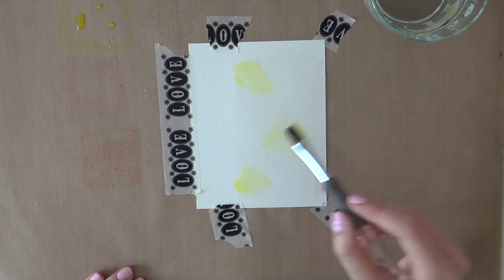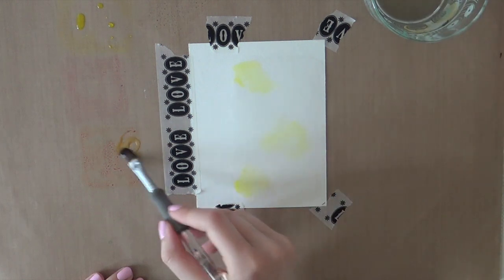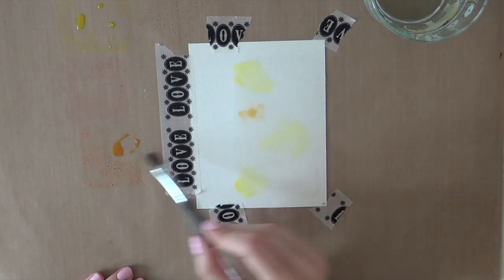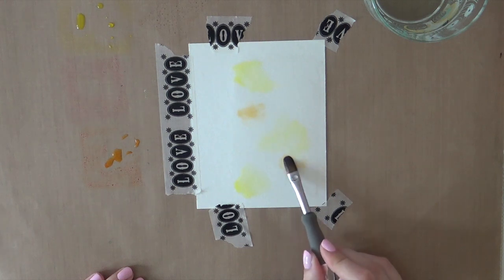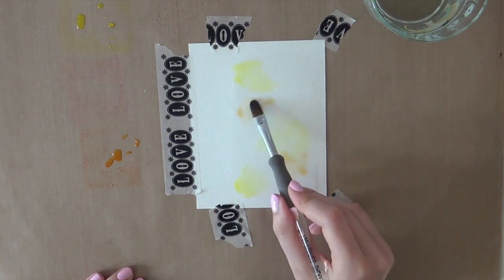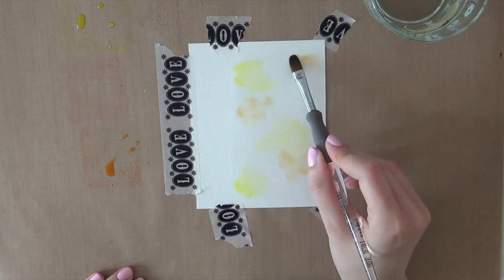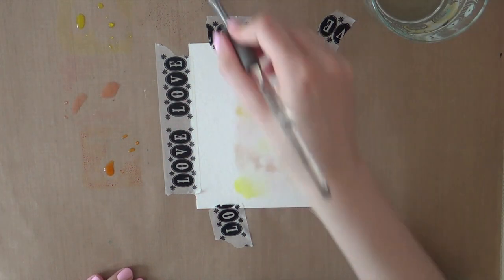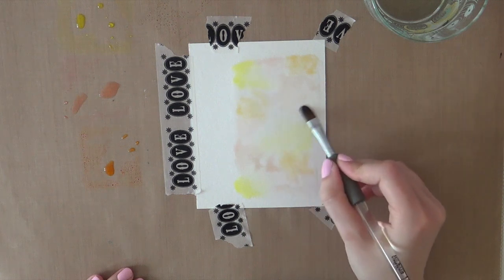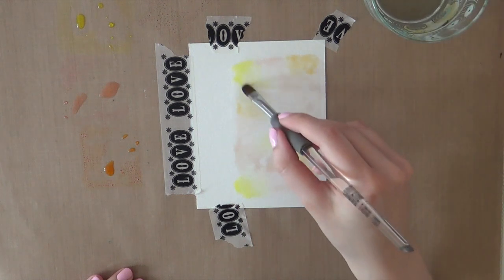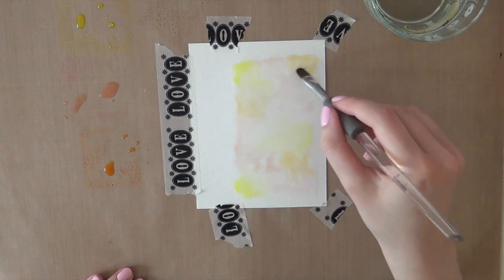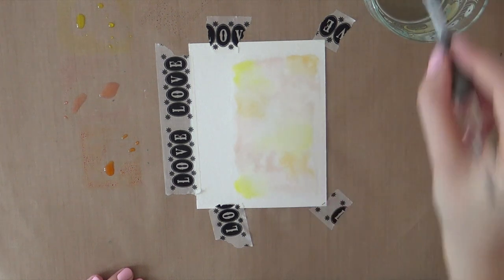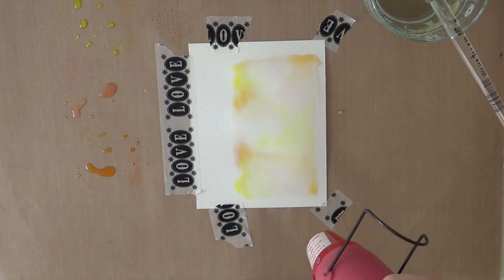I am using Distress Ink today. I am using Squeezed Lemonade, Spun Sugar, Dried Marigold and Picked Raspberry. I will be using that color later on. You can see it right now, but I also used Tattered Rose. I don't have the Distress Ink Pad from that color, so I just scribbled down the Distress marker onto my craft sheet and it works great as well.